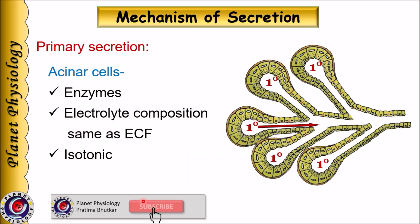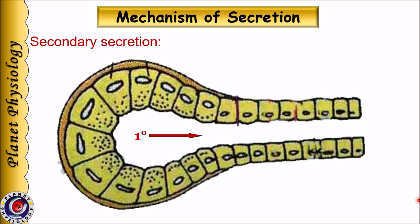The primary secretion of acinar cells contains enzymes, and the electrolyte composition is the same as that of extracellular fluid. That means it contains higher concentrations of sodium and chloride, and lower concentrations of potassium and bicarbonate. It is isotonic in nature.